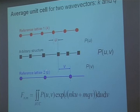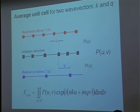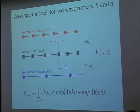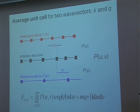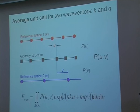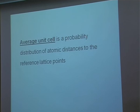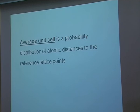So we have two scattering vectors, k and q, and we calculate the shortest distances of the atomic positions to the reference lattice points. It is easy to show that the structure factor — when it's a Fourier transform of this probability for the object we call average unit cell — is limited to wavelengths connected to k and q. So the average unit cell is a probability distribution of atomic distances to the reference lattice points.